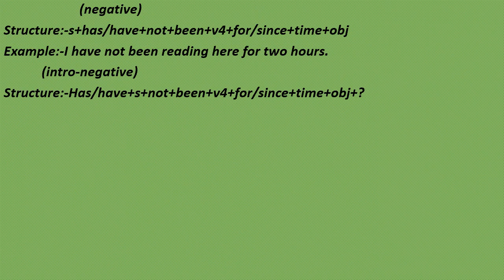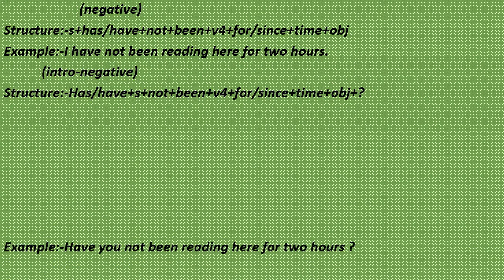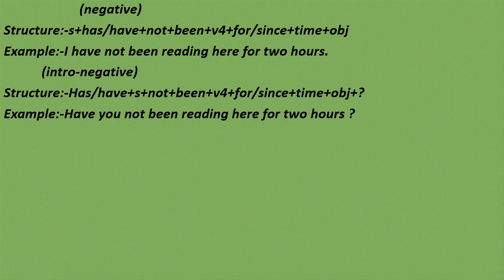The interrogative-negative structure is: has/have + Subject + not + been + V1-ing + for/since + time + Object + question mark. Example: Have you not been reading here for two hours?